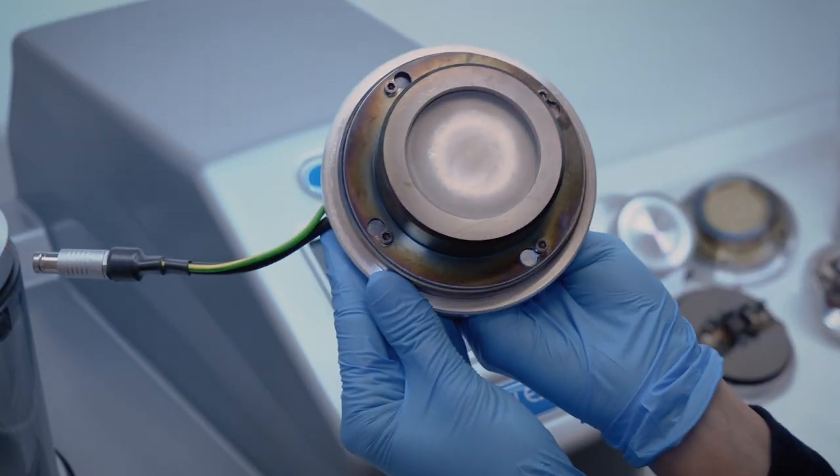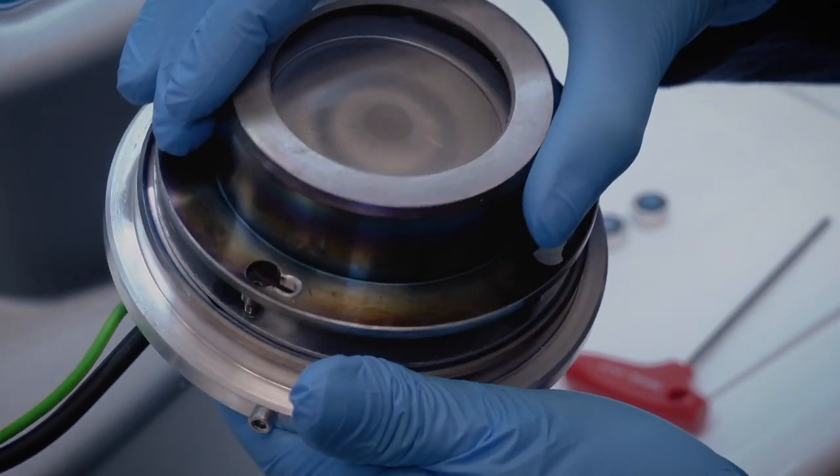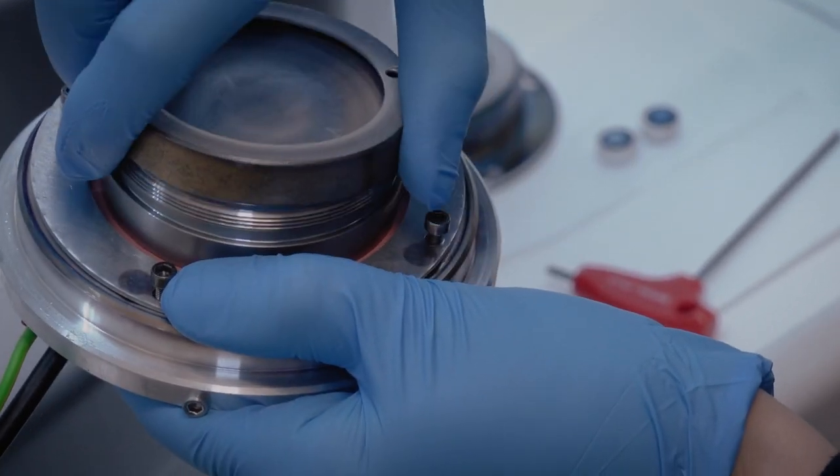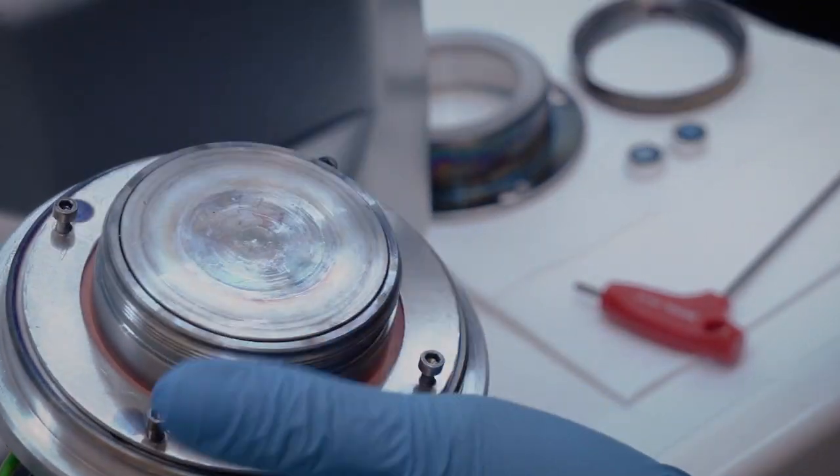To remove the target from the head, four locking screws must be removed to take off the top shield. Under the top shield, there is a holder that needs to be unscrewed to access the target disk and replace it.